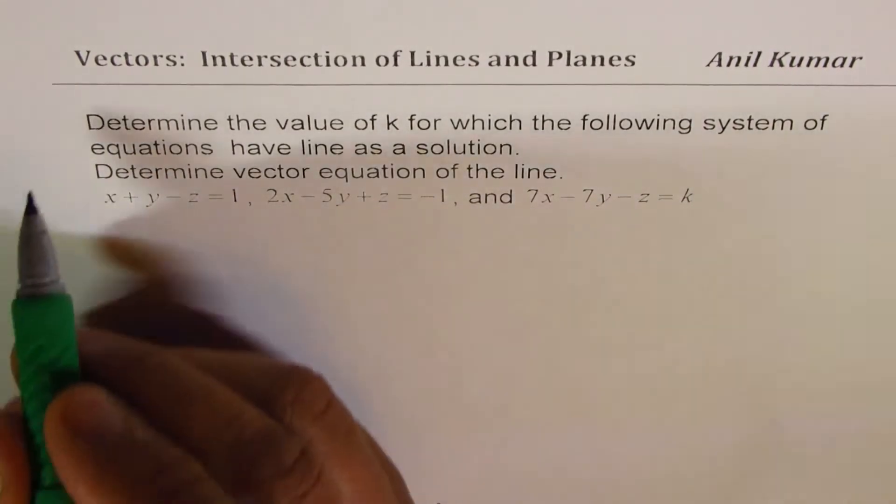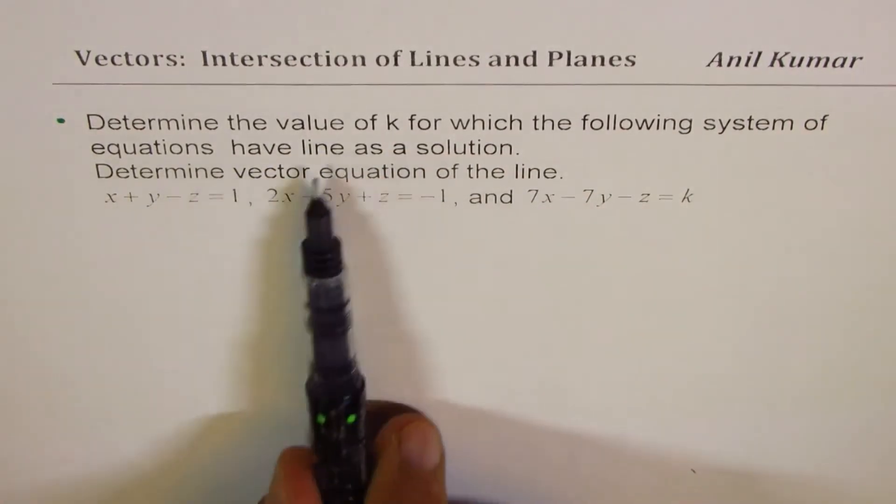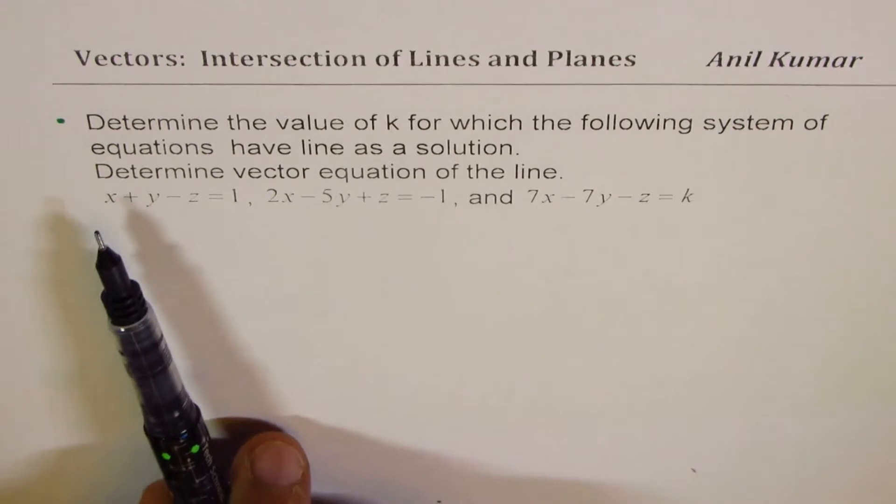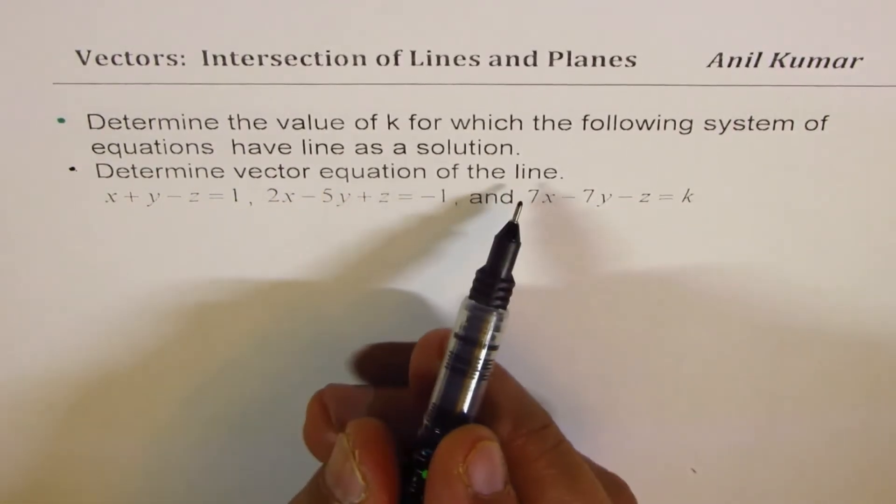determine the value of k for which the following system of equations have line as a solution. Then part b is, determine vector equation of that line.